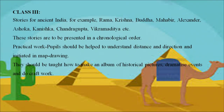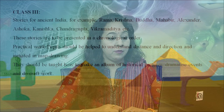Class 3 students can be exposed to the story of ancient India — for example, Ram, Krishna, Buddha, Mahavir, Alexander, Ashoka, Kanishka, Chandragupta, Vikramaditya, etc. — presented in chronological order. Practical work includes helping pupils understand distance and directions, initiating map drawing, making albums of historical pictures, dramatizing events, and doing craft work.